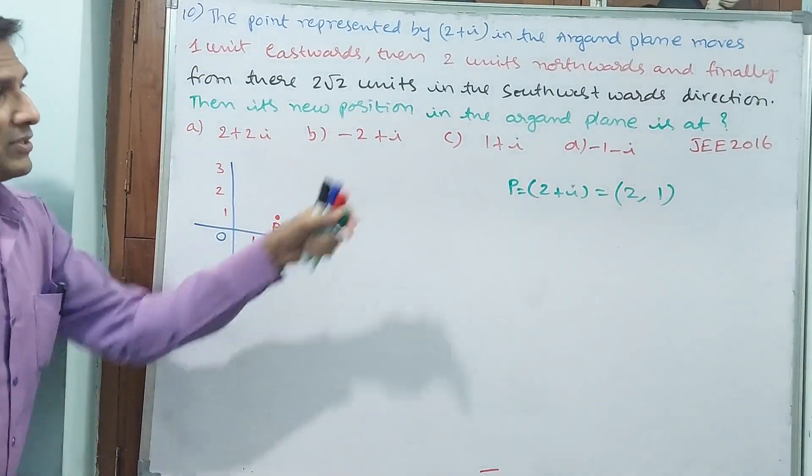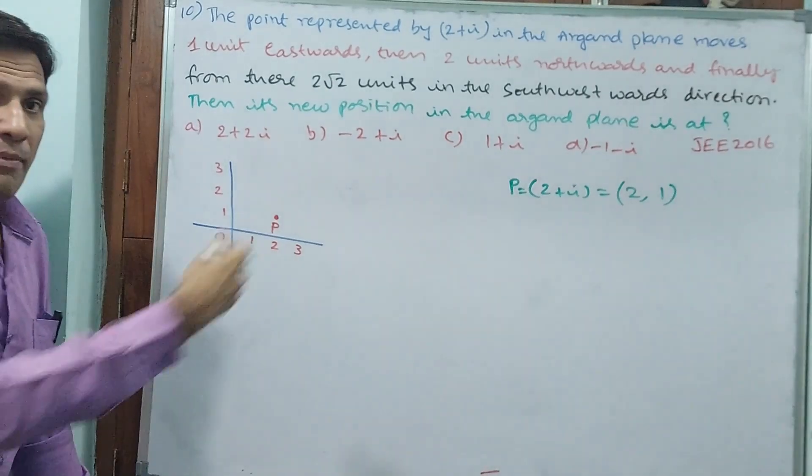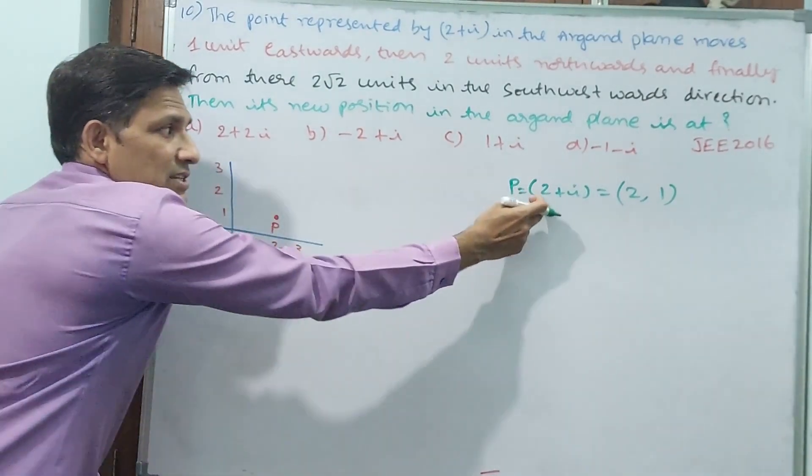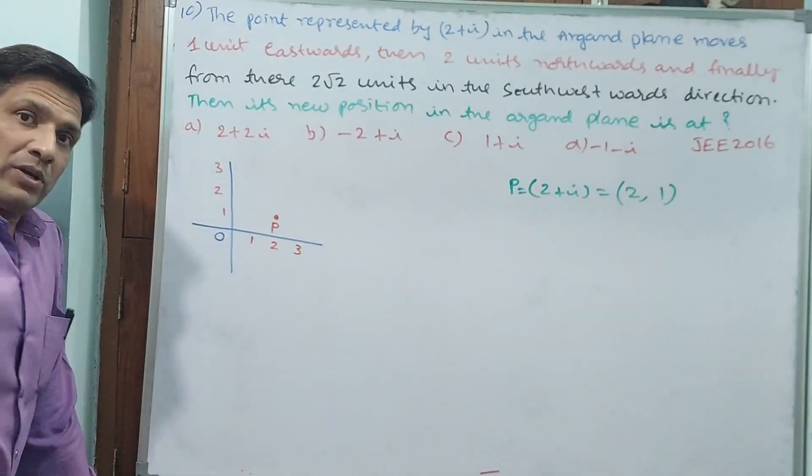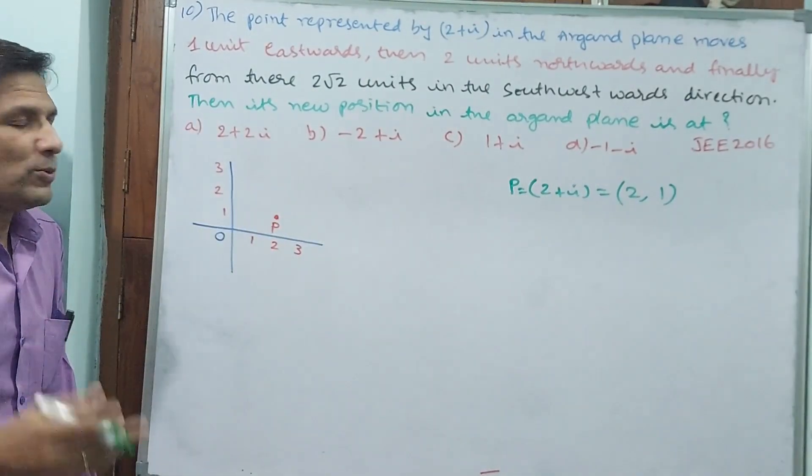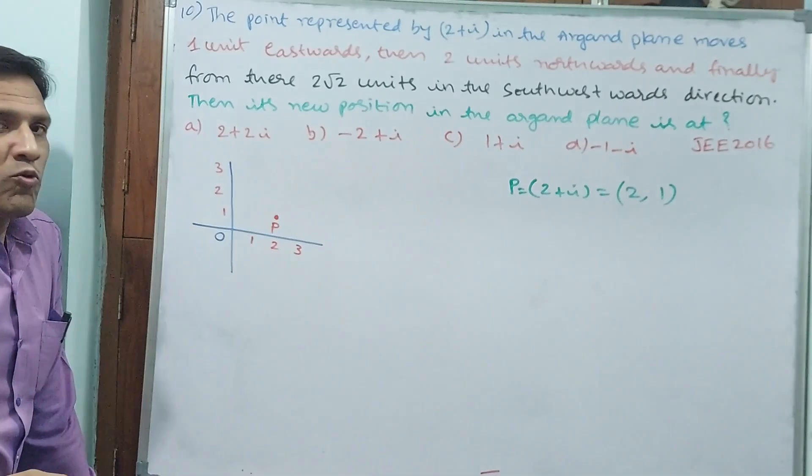First position P is equal to 2 plus i, that is equal to 2 comma 1. Is it correct? Definitely correct. Why? Because see, important format: we can show first is x, next is y. If we have 2 minus i, minus 1 will come. Like that. This is P, 2, 1.